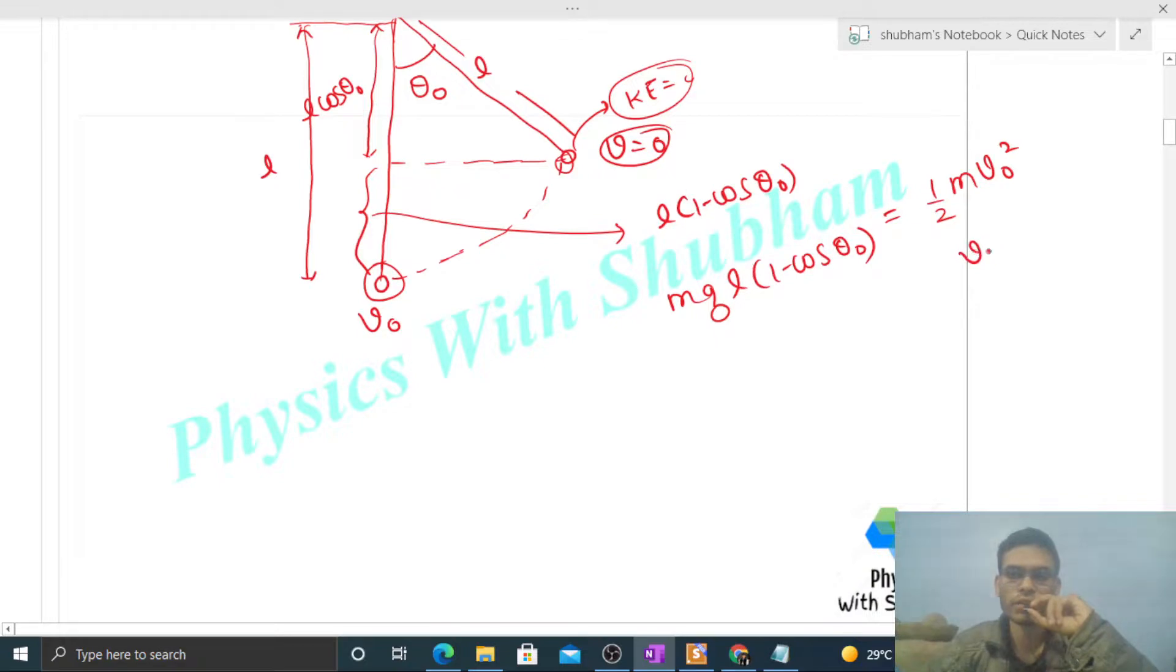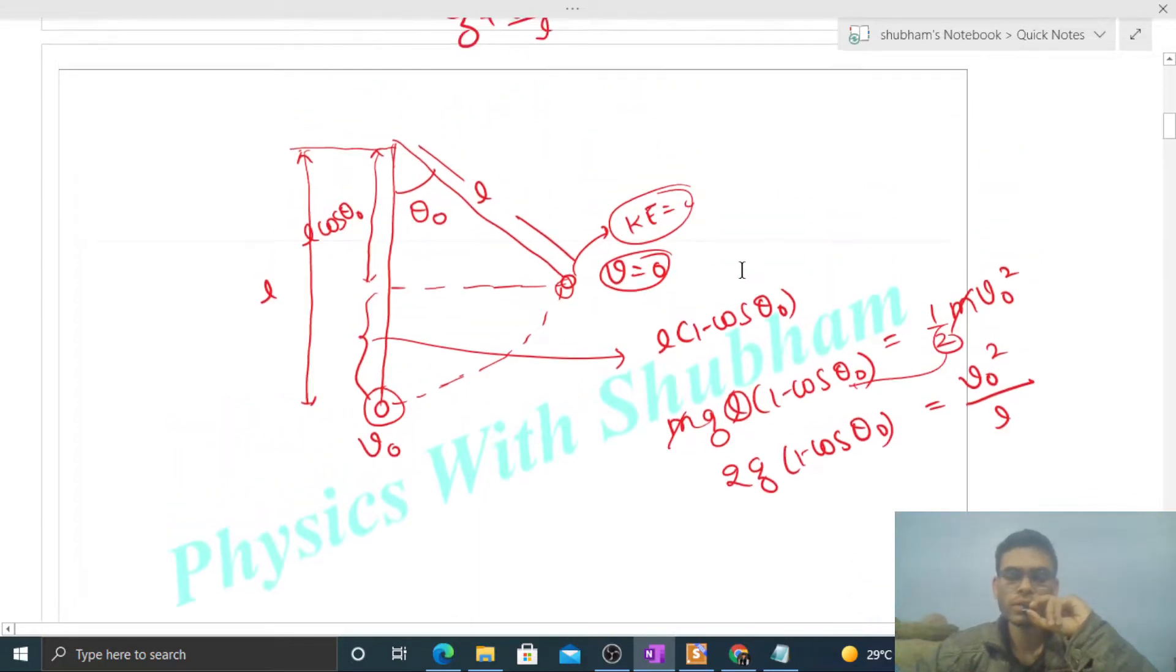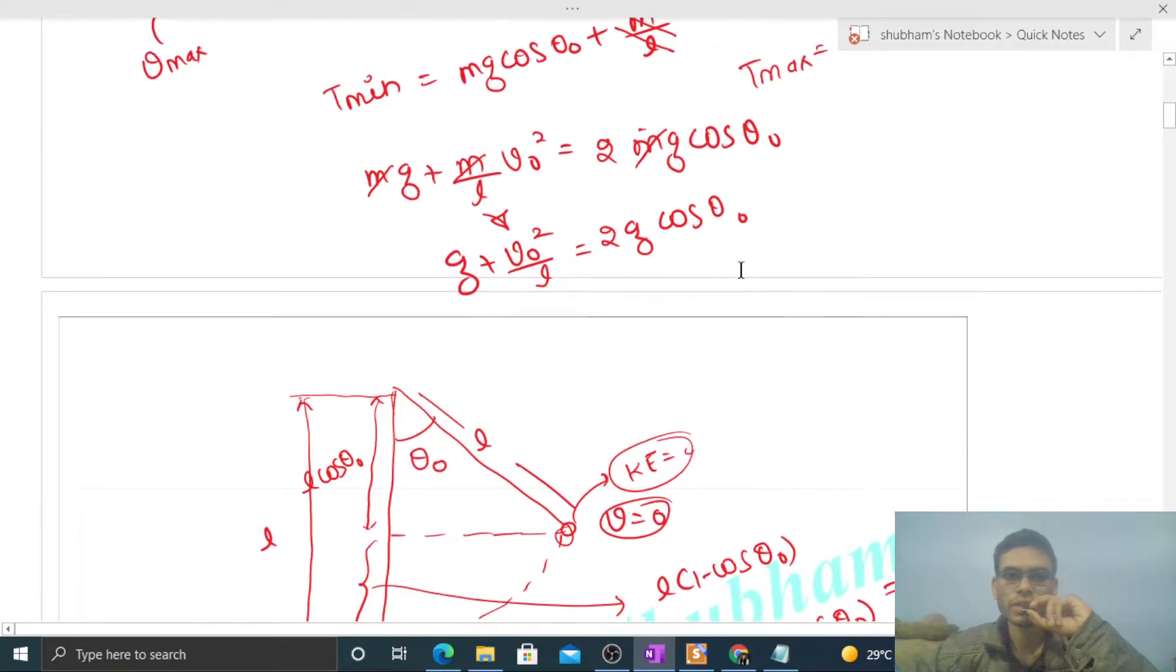From here you will get the value of v naught square by L. M cancels. Take L to the denominator on the other side. So that will be 2g times one minus cos theta naught. This 2 will come here, so 2g times one minus cos theta naught. So its value is 2g times one minus cos theta naught.